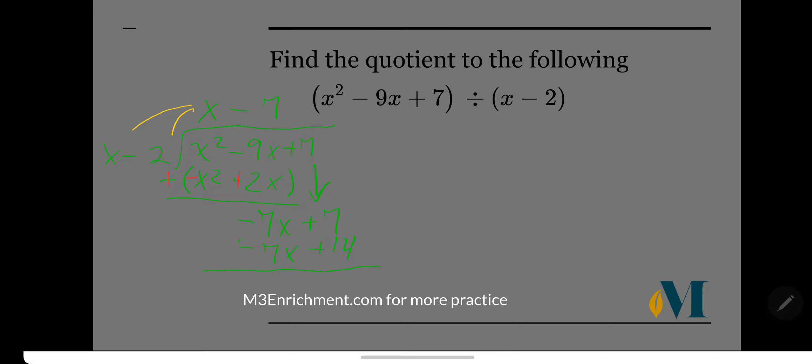So now we want to subtract this polynomial. I'm going to turn it to an addition problem and change the signs of everything inside the parentheses. So positive 7 plus negative 14 is going to give us negative 7. And our first terms cancel out. So here we have that remainder of negative 7. So we represent our remainder as a fraction, where negative 7 is the numerator and our denominator is our divisor, x minus 2.